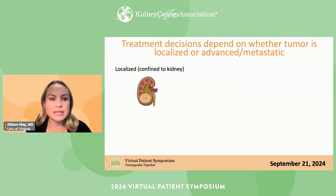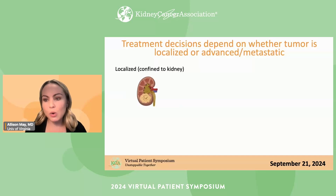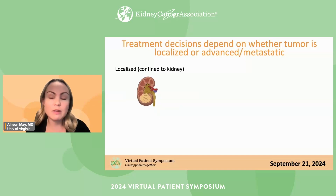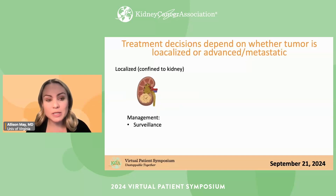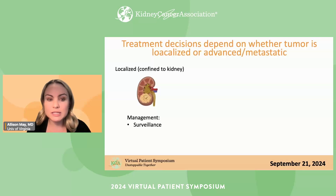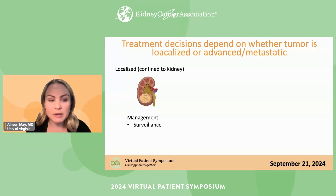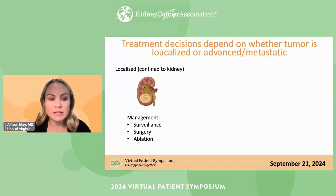How we treat kidney cancer largely depends on whether it's localized or advanced and metastatic. If it's localized — confined to the kidney — we have many ways to treat it. For tumors two to three centimeters or less, we often do surveillance, since we know these tumors often won't grow or cause problems, and this avoids the side effects of therapy. Other options include surgery, ablation where we can freeze or burn the mass, and radiation.